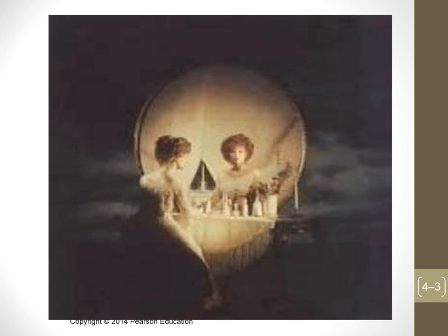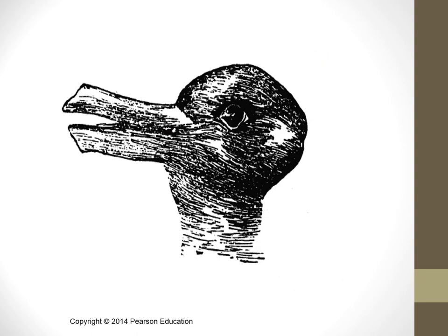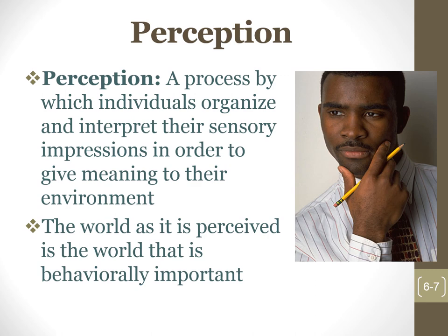What is this? It's a girl. And what is this? It's a horse. And what is this? It's a rabbit. And what is this? It's an old woman, or a young girl. What's perception? Perception is a process by which individuals organize and interpret their sensory impressions in order to give meaning to their environment.